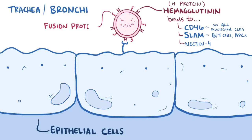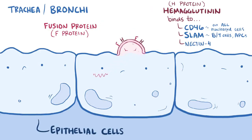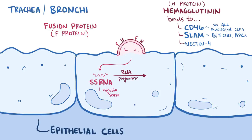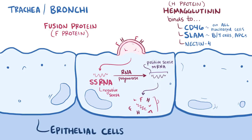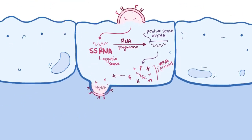Once bound, the fusion protein, or F-protein, helps the virus fuse with the membrane and get inside the cell. This virus is a single-stranded RNA virus and is also negative sense, meaning it first has to be transcribed by RNA polymerase into a positive sense mRNA strand. After that, it's ready to be translated into viral proteins, wrapped in the cell's lipid envelope, and sent out of the cell as a newly made virus.